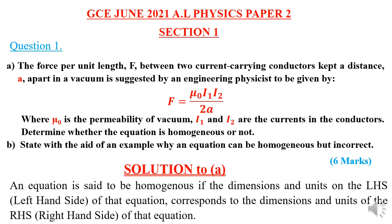Solution to A. An equation is said to be homogeneous if the dimensions and units on the left-hand side of that equation correspond to the dimensions and units of the right-hand side. To check this, you evaluate the dimensions of both sides and compare them. If they are the same, the equation is homogeneous; if not, it is not homogeneous.